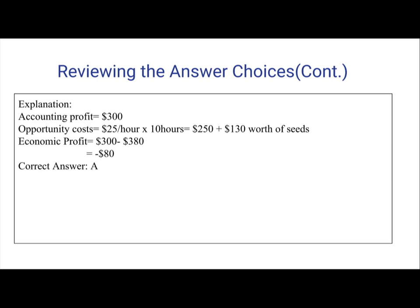Now economic profit equals accounting profit minus opportunity cost. So $300 minus $380 equals negative $80, which is answer A.